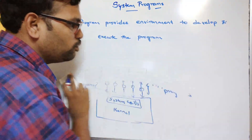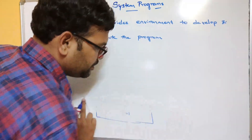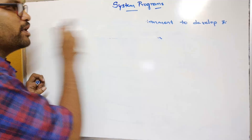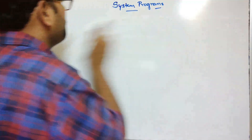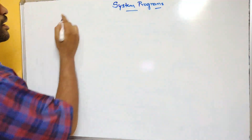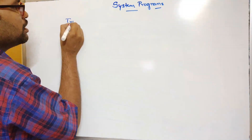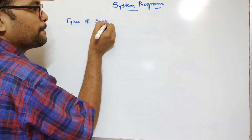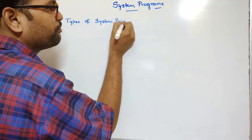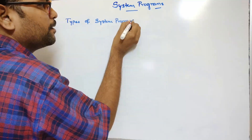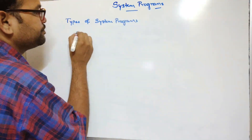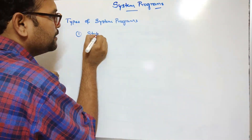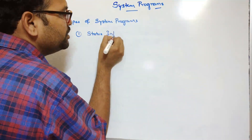System programs are classified into different types. Let's see all those different types of system programs. The first one is status information.